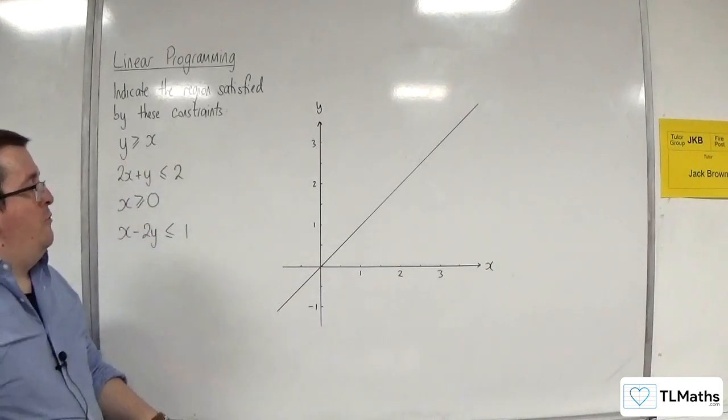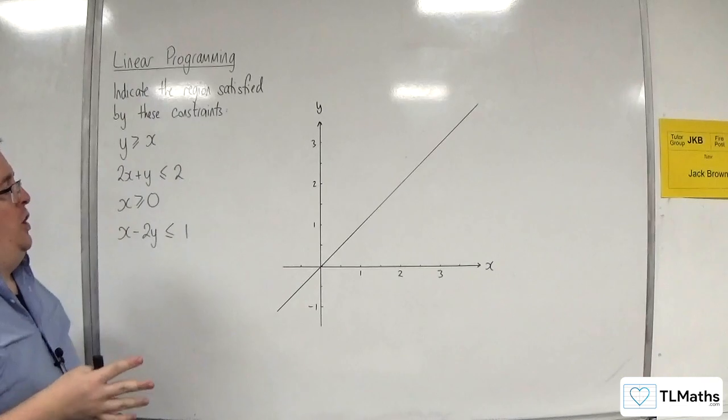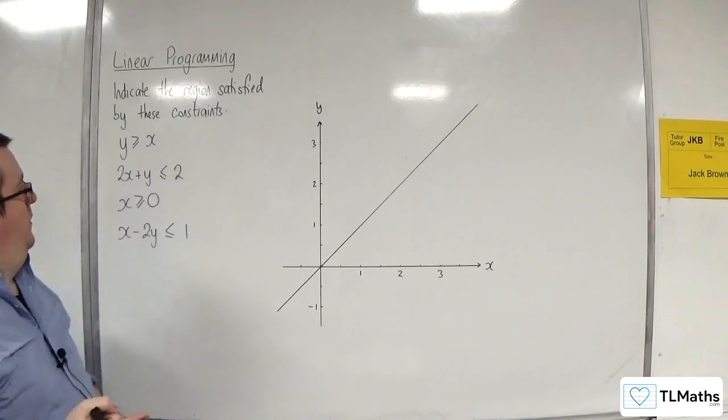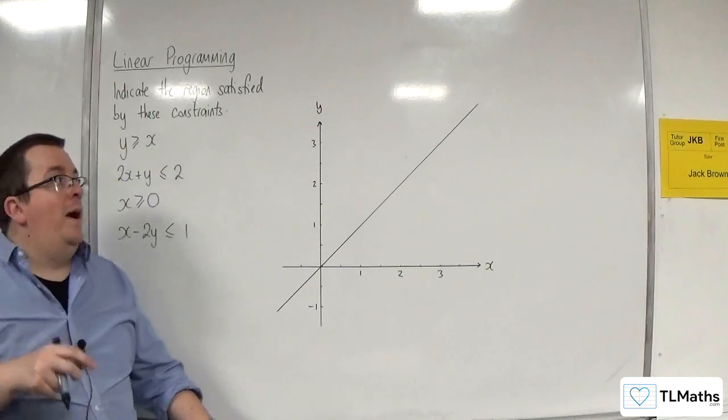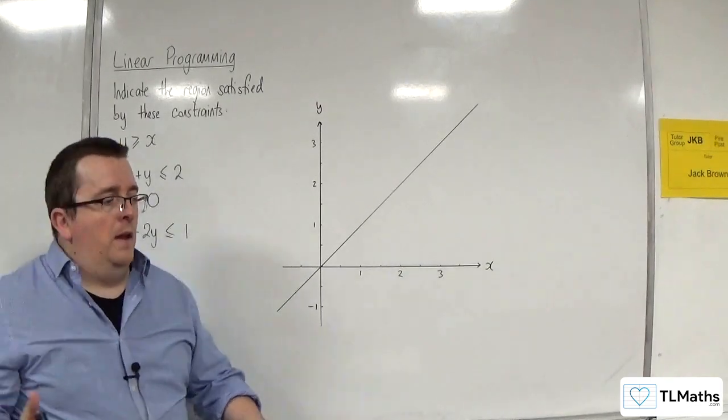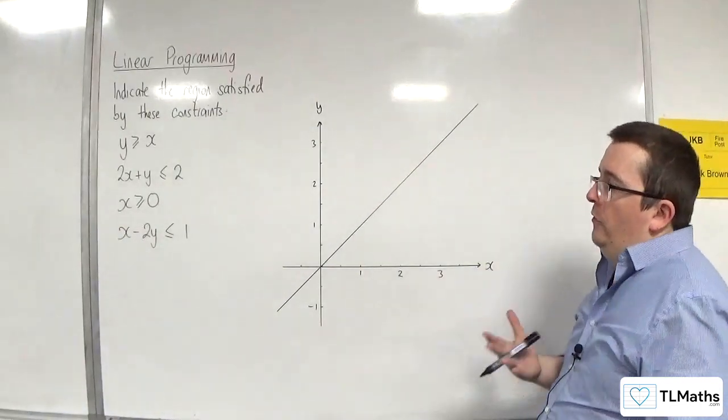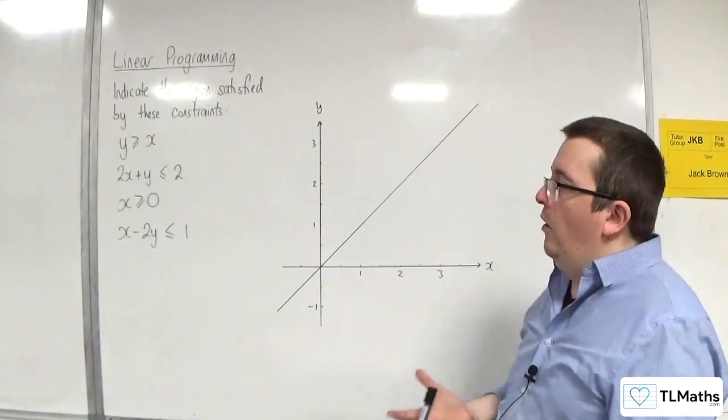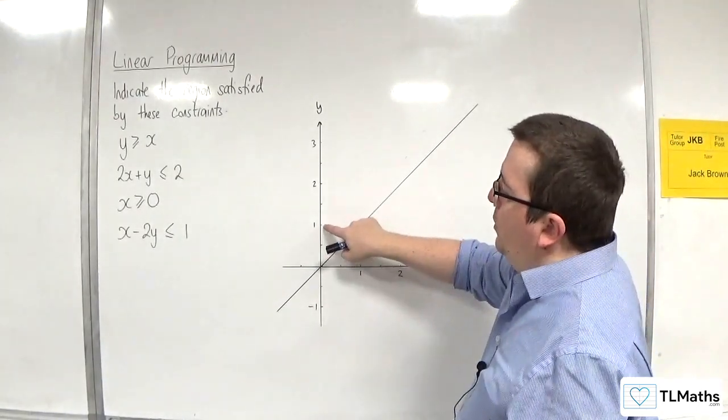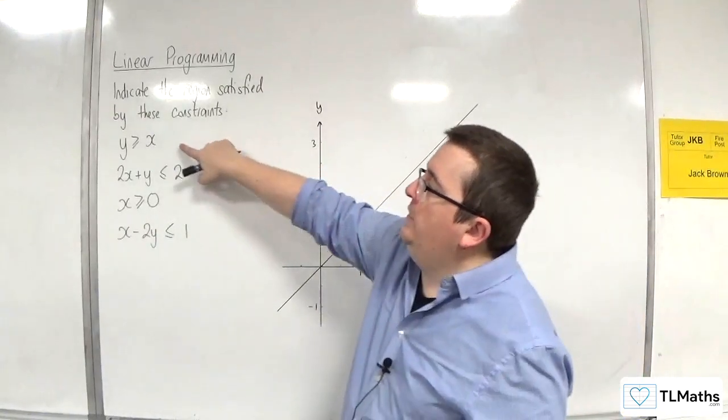Now, let's worry about the inequality, because we want to identify and shade the region we don't want. So we need y is greater than or equal to x. Now, the way to check any inequality to determine which region you want, if you're not 100% sure, is to just choose a point that's not on the line. So let's choose this point here, so 0, 1, and we substitute it into the inequality.